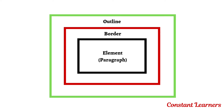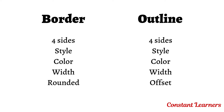Both border and outline have four sides: top, right, bottom, and left. The properties for both are also similar. The first and most important property is style — border-style and outline-style. If we do not define the style for both border and the outline, it won't show up on our web page.